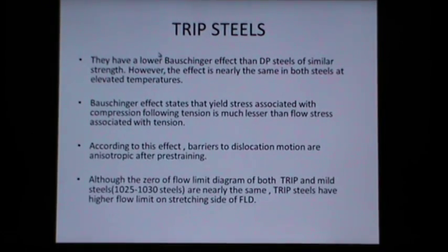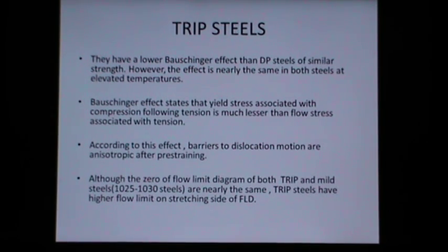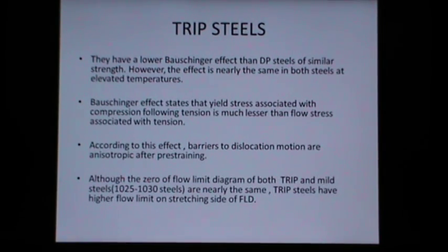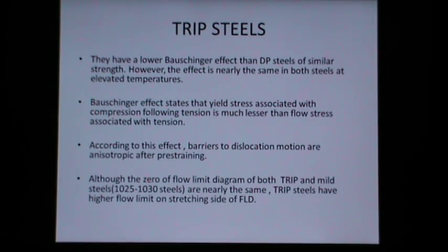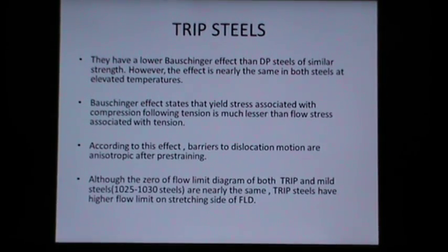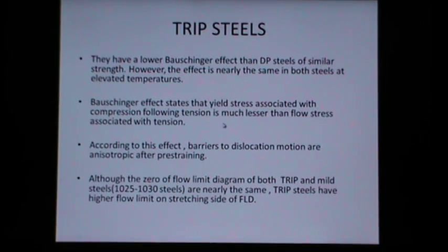The point where 95 percent of austenite transforms to martensite is defined as Mf, the martensitic finish temperature. TRIP steels have a lower Bauschinger effect than dual phase steels of similar strength, though the effect is nearly the same in both steels at elevated temperatures. The Bauschinger effect states that the yield stress in compression following tension is much lesser than the flow stress in tension.